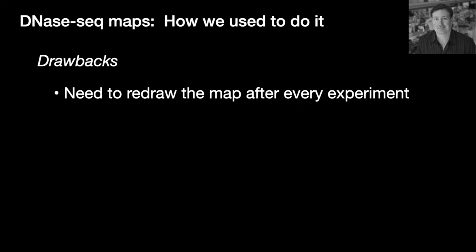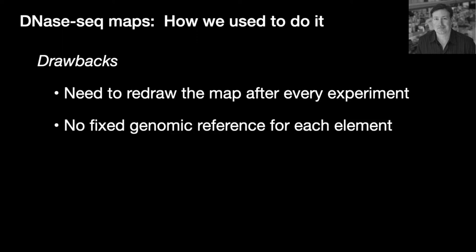First, you obviously need to redraw the map after every experiment. Second, there's no fixed genomic reference for each element. They're all discovered de novo.